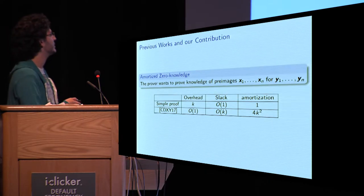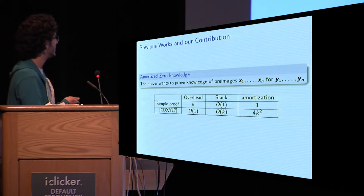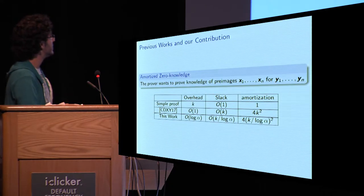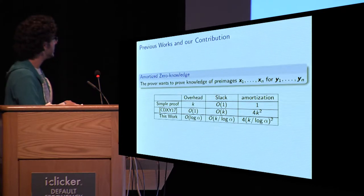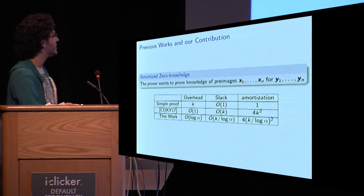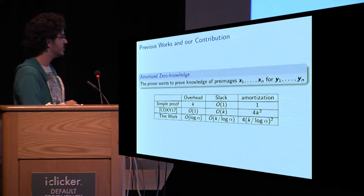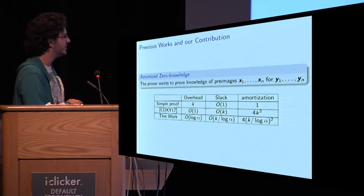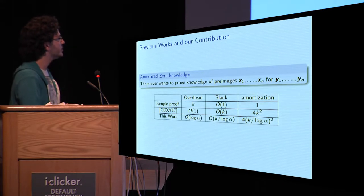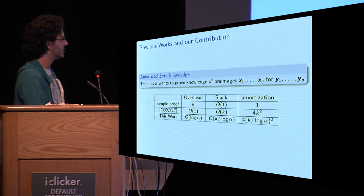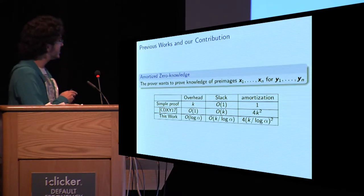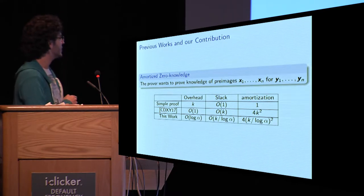Our work is to reduce this amortization. What we achieve is overhead linear in some logarithmic in some parameter alpha. But here the constants are very small, so this basically does not matter at all. We divide the slack by log alpha, which is in itself nice, but just a side effect. But most importantly, we get amortization over four times K divided by log alpha squared equations. Which can reduce the number of equations quite a lot.